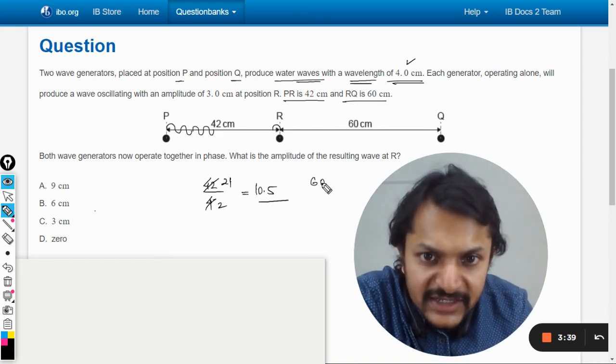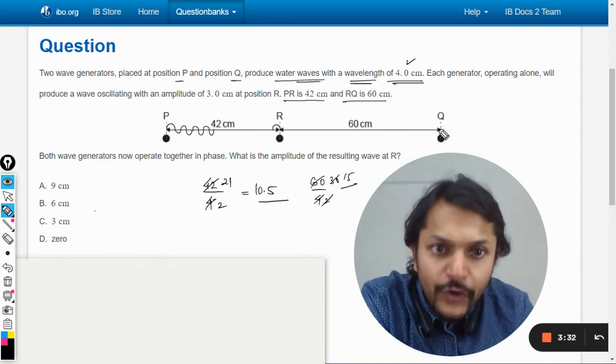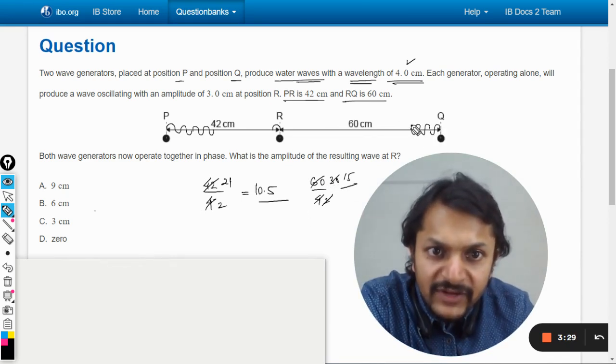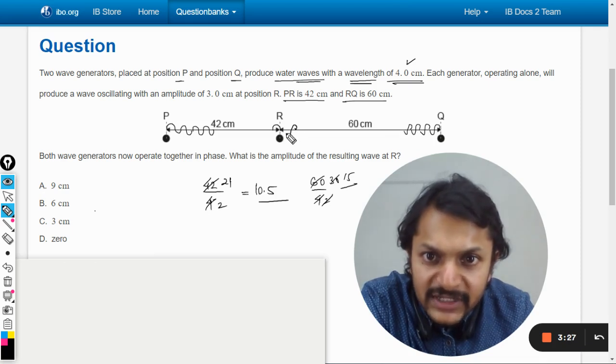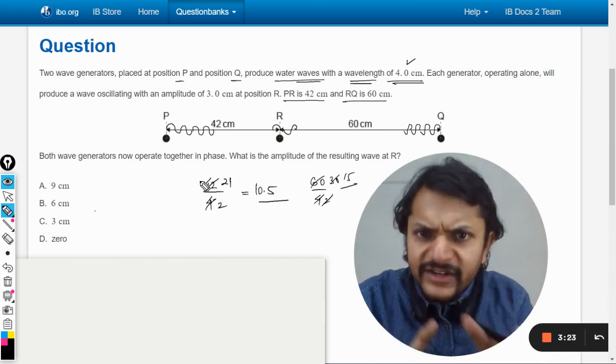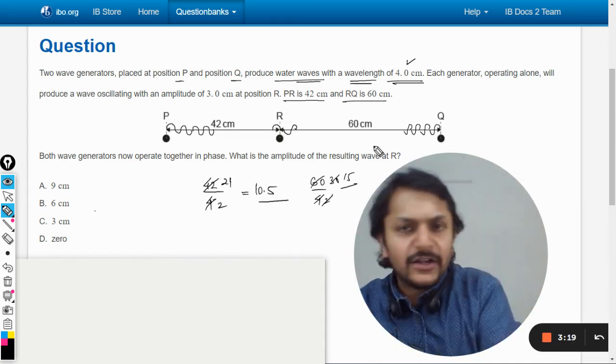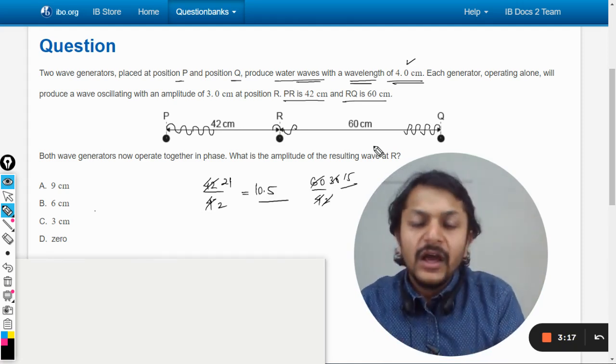60 divided by 4 is 15. So from Q, 15 complete wavelengths will reach R. From Q the wavelengths are completed and from P half of the wavelength is completed, so it becomes a clear-cut case of destructive interference.